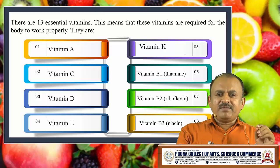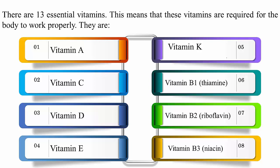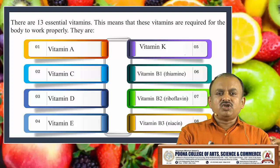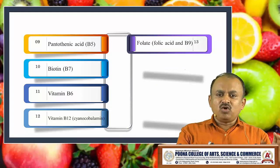The 13 essential vitamins are: vitamin A, vitamin C, vitamin D, vitamin E, vitamin K, vitamin B1 (thiamine), vitamin B2 (riboflavin), vitamin B3 (niacin), pantothenic acid (vitamin B5), biotin (vitamin B7), vitamin B6, vitamin B12 (cyanocobalamin), and folate, which is also called folic acid or vitamin B9.